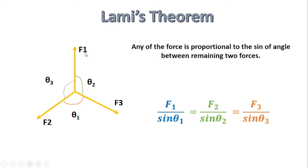F1 is proportional to the angle between F2 and F3, that is theta 1, so F1 divided by sine of theta 1. F2 is proportional to the angle between F1 and F3, that is theta 2, so F2 divided by sine of theta 2. F3 is proportional to the sine of the angle between F1 and F2, that is theta 3, so F3 divided by sine of theta 3. In this way we apply Lamy's theorem for the three concurrent force system.